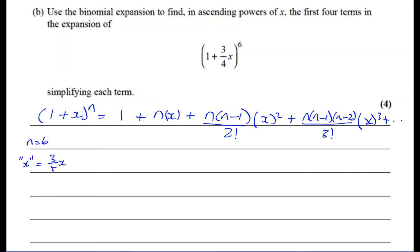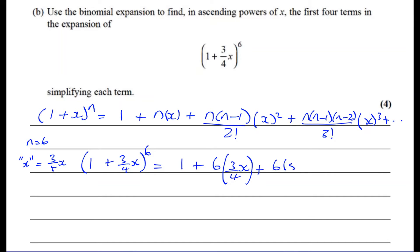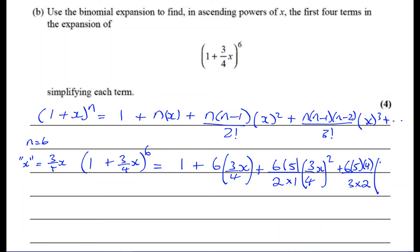So for (1 + ¾x)⁶, the first term is 1. The second term is nx = 6 × (3/4)x = (9/2)x. The third term is n(n−1)/2! × x² = (6×5)/2 × (3/4x)² . Here 2! means 2×1 = 2. We now have the first three terms and need one more.